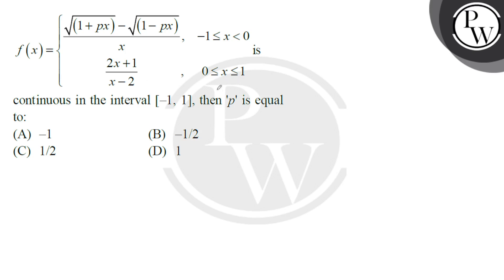The function is continuous in the interval [-1, 1], then p is equal to what? First of all we will find the left hand limit, that is limit as h tends to